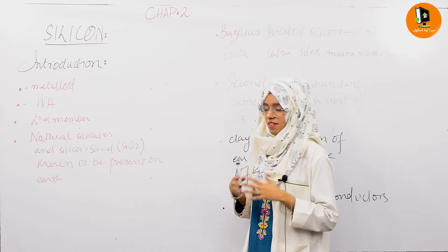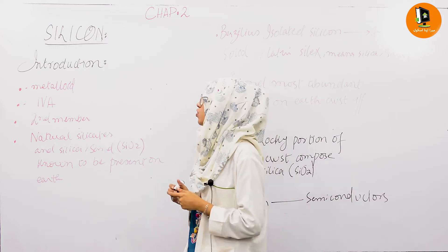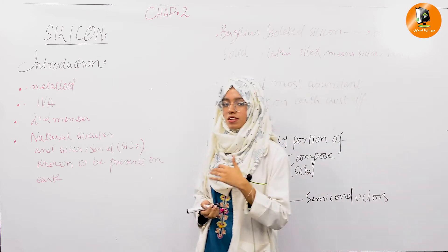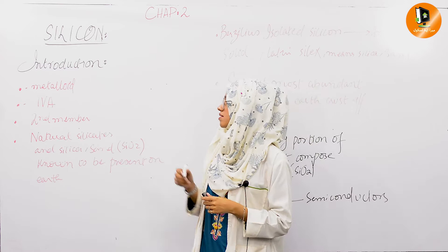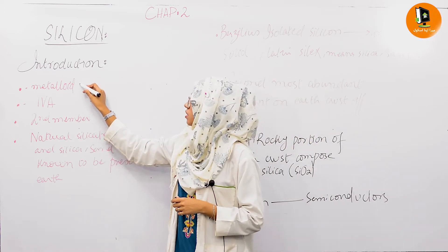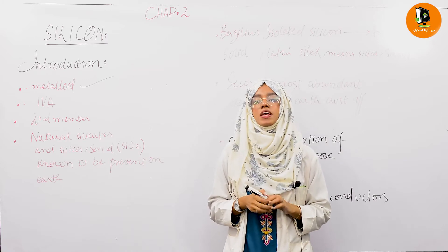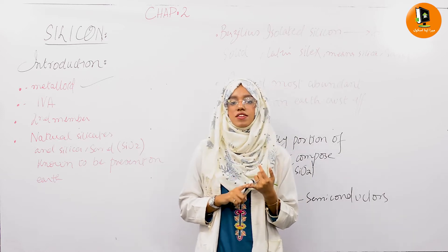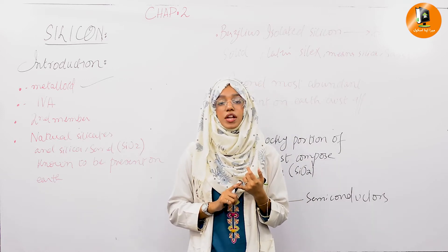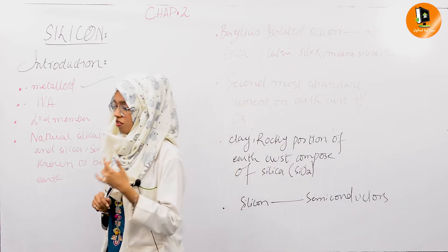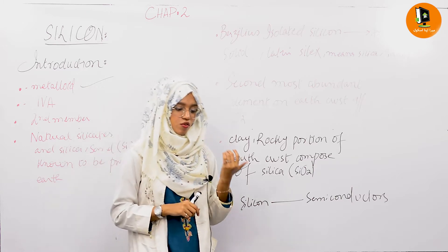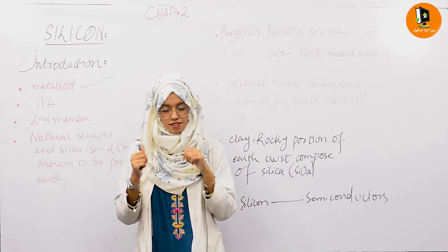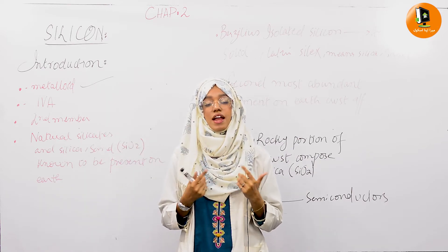Moving towards silicon's basic introduction: the first thing about silicon is its nature. Silicon is a metalloid. Metalloids are elements which have the properties of both metals as well as non-metals. Silicon is a metalloid, which means it acts as both electropositive and electronegative — metals are electropositive and non-metals are electronegative — so it exhibits both characteristics.